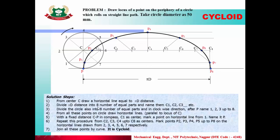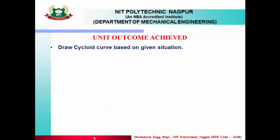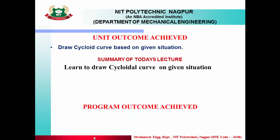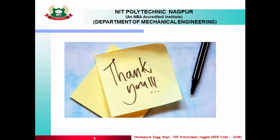So here, you have seen this video on the cycloidal curve. You have been given the problem and the solution steps. If you have any problem, then read the solution steps and follow your drawing. I hope your drawing will become successful. Unit outcomes achieved: draw a cycloidal curve based on given situation. Today we have studied how cycloidal curve is made. That's all for today. Let's see in the next lecture. Keep learning, happy learning.